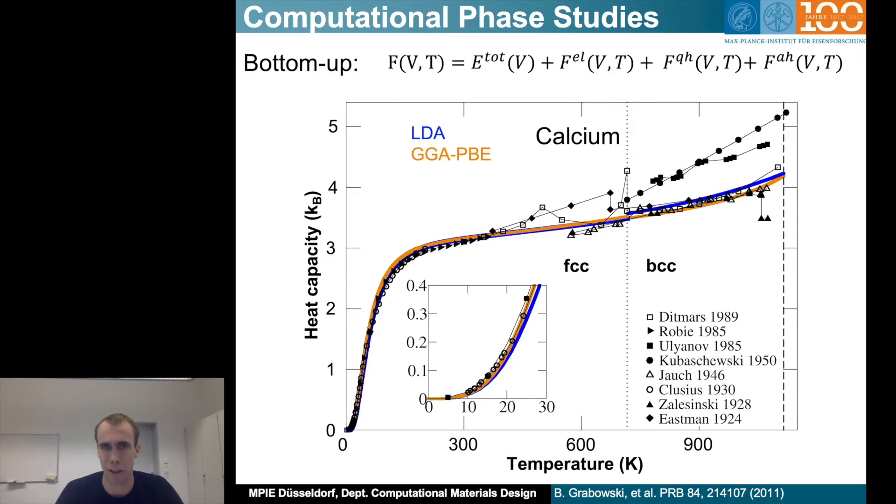The theoretical results are based on DFT calculations, density functional theory, and we compute the free energy by adding different contributions starting with the total energy, the electronic contribution to the free energy, the quasi-harmonic one, and then the anharmonic contribution. And we can nicely see there's great agreement at the low temperature phase, the centered phase, and then also for the BCC phase.